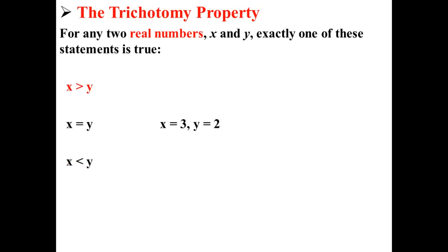Here we have the real numbers x equals 3 and y equals 2. Here it is only true that x is greater than y. It is not true that x is equal to y, and it is not true that x is less than y. Only one of these statements can be true — in this case, x is greater than y. This is according to the trichotomy property.